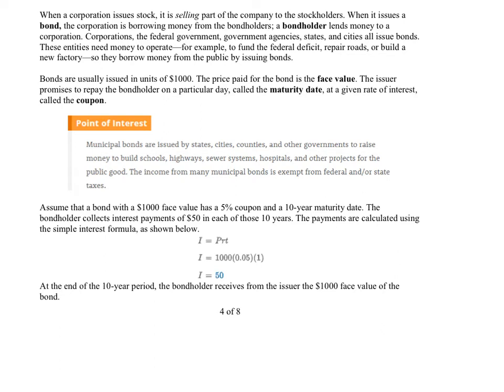So assume $1,000 face value. That's essentially the loan amount for the company, or if you're the bondholder, that's your investment amount. You gave them $1,000. This 5% coupon, that's your R value right there.